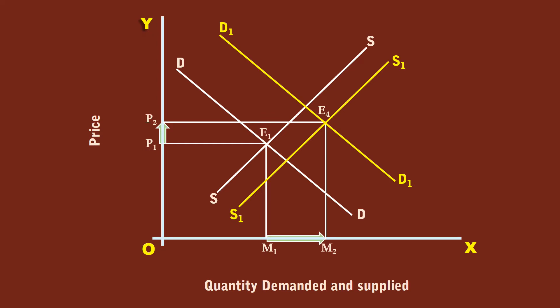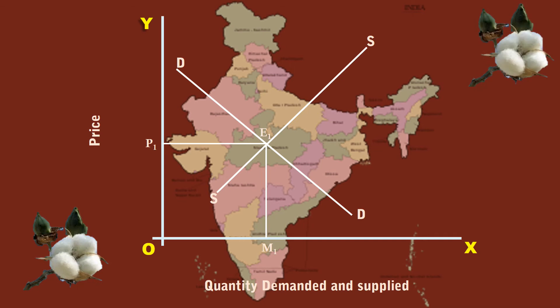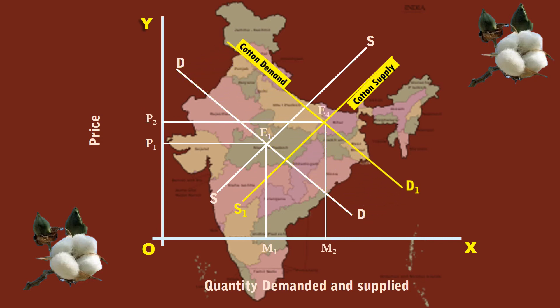The net result is the price increases from P1 to P2 and the quantity increases from M1 to M2. The impact of the increase in demand and supply is partly absorbed by price and partly by quantity. From classroom to the real world — in India, during the end of 2017, the cotton price was on the rise despite increased cotton supply. This is mainly because the increase in demand for cotton was greater than the increase in supply.